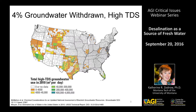The USGS estimates that about 4% of groundwater withdrawn has a high total dissolved solids concentration. Looking at high-TDS groundwater withdrawals across the United States, a few states really stand out: California, Wyoming, Oklahoma, and Texas.